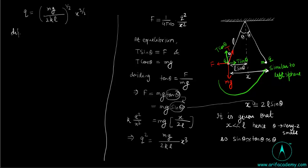Differentiating this equation with respect to time, dq by dt equal to Mg by 2K L.